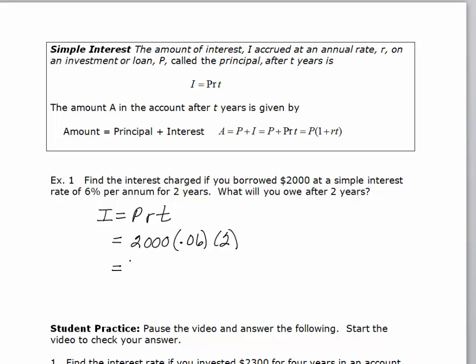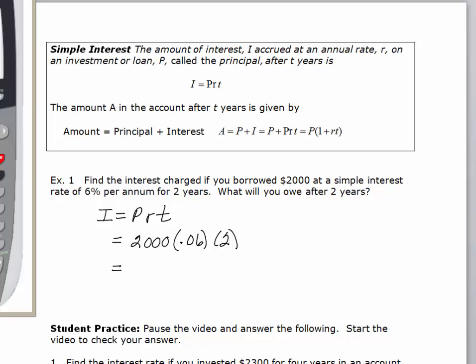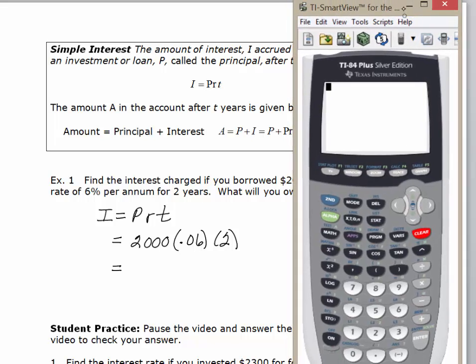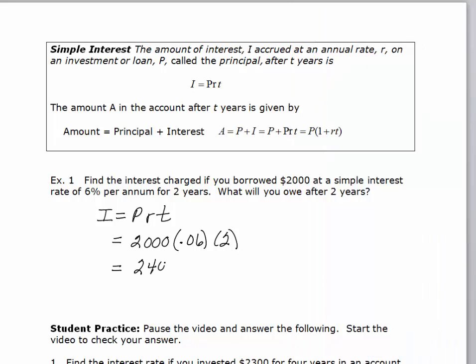And the principal is $2,000. That's the amount we borrowed. The interest rate is 6% or 0.06 as a decimal. The time is 2. And we can multiply this out on our calculator. Or this one you could probably do in your head. But we'll pull up the TI and do this out. So we take $2,000, multiply it by the 0.06, multiply it by 2, and we get our interest, which is $240. And then to figure out how much we owe, we would just have our $2,000 plus the $240 at the end of two years. So we would owe $2,240.